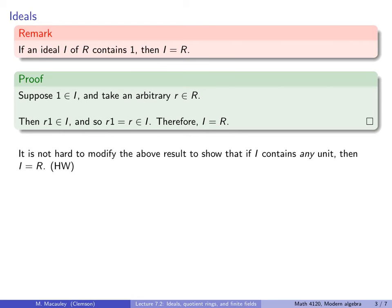It is not hard to modify the above result to show that if the ideal I contains any unit — any element that has a multiplicative inverse — then the ideal has to be the entire ring. That is something left for the homework.